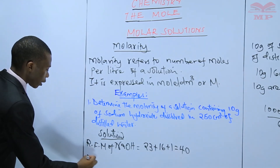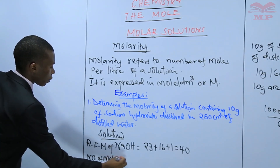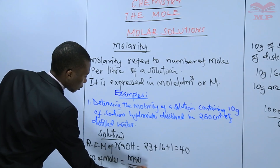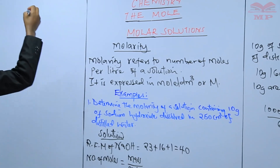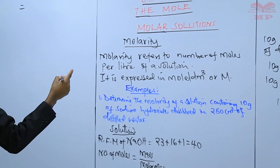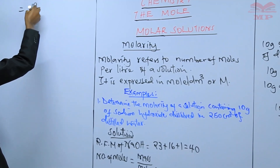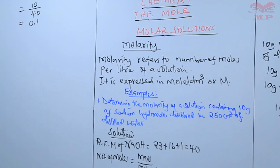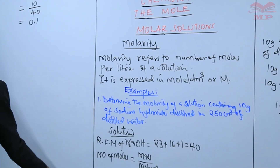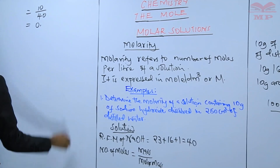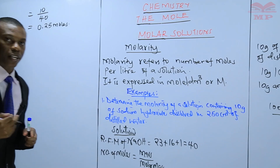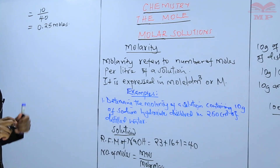Then we calculate the number of moles. The number of moles are given by mass divided by molar mass. Therefore, this will be 10 grams divided by 40, which is the molar mass, and this gives you 0.25 moles. Those are the number of moles of sodium hydroxide.